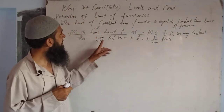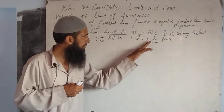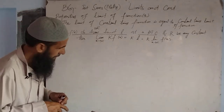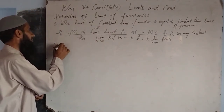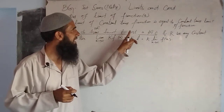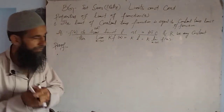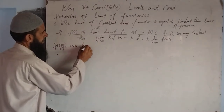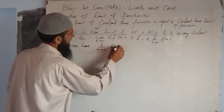So the limit of a constant times a function is equal to the constant times the limit of the function, which equals k times l. Now we will give the proof of this property. We are given that the limit of f(x) as x tends to c is equal to l.